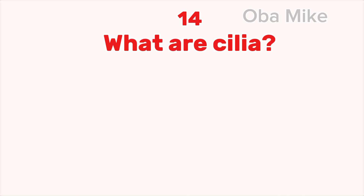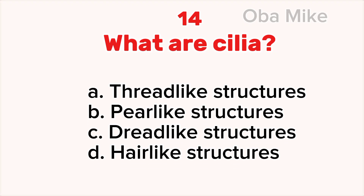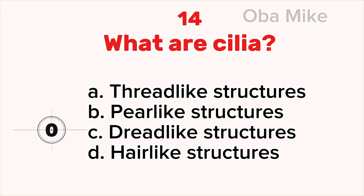14. What are cilia? A. Thread-like structures, B. Pear-like structures, C. Dread-like structures, D. Hair-like structures. The correct answer is D. Hair-like structures.